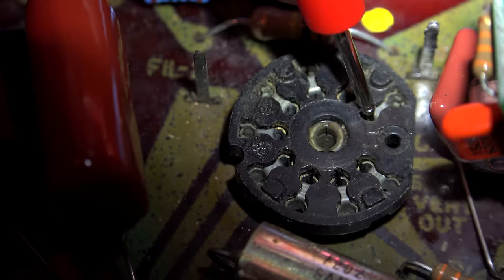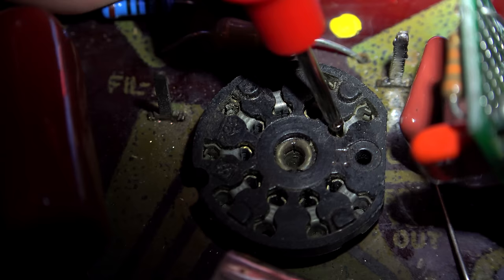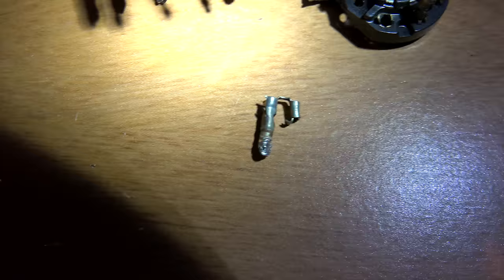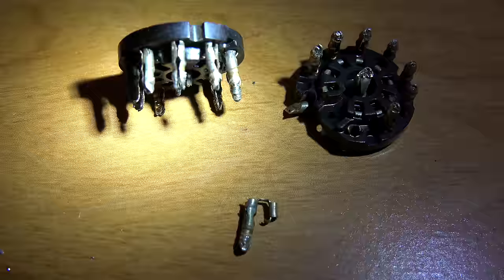Another major problem these Predicta televisions had were faulty tube sockets. When there's a break in the metal like this, you have to wiggle around the tube or even put weight on it for it to light up. Here you can see what the metal looks like in one of these things, and it's so thin, every time you take a tube out or put it in, you bend that.